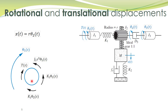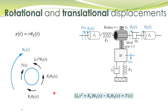We can now easily write the torque balance equation: the sum of torques in the clockwise direction equals the sum of torques in the counterclockwise direction. This torque plus this torque equals this torque plus this torque, so bringing a term to the left-hand side gives a negative sign.